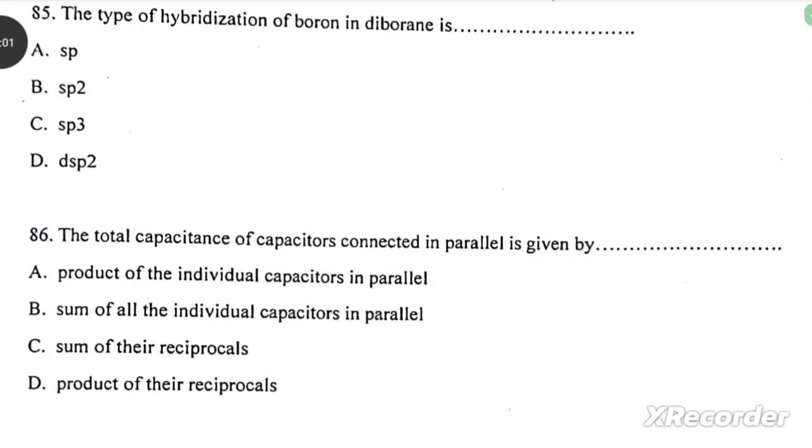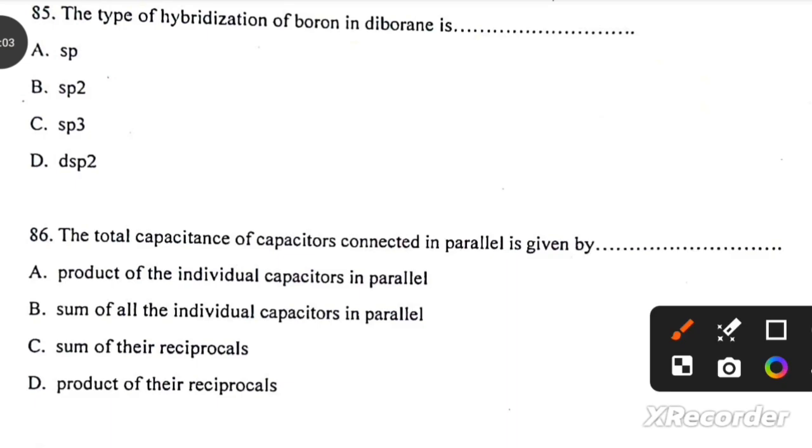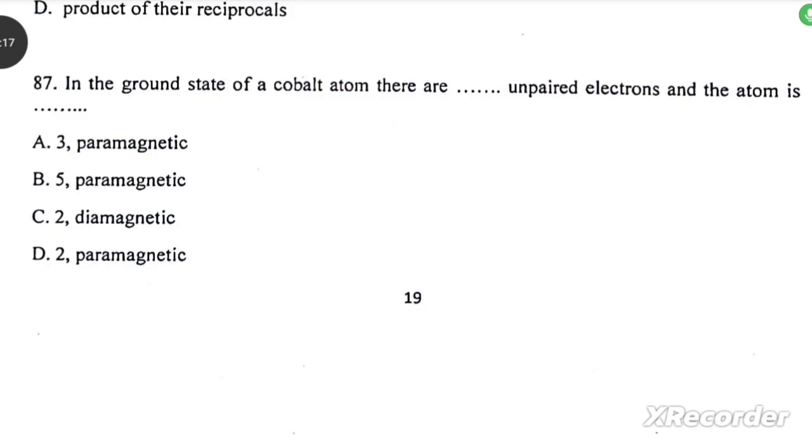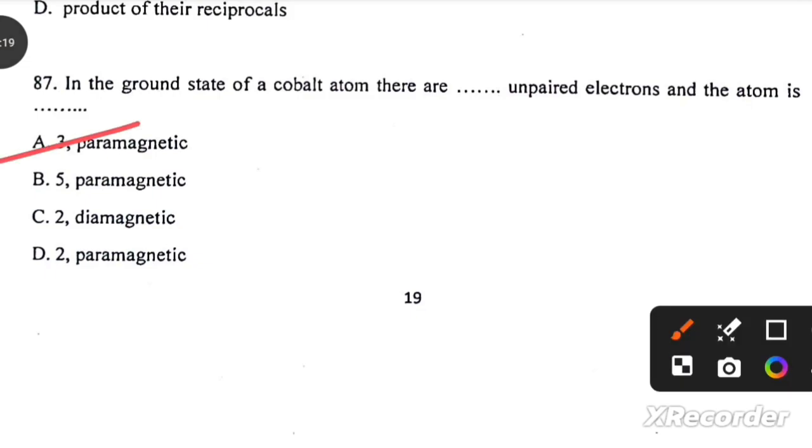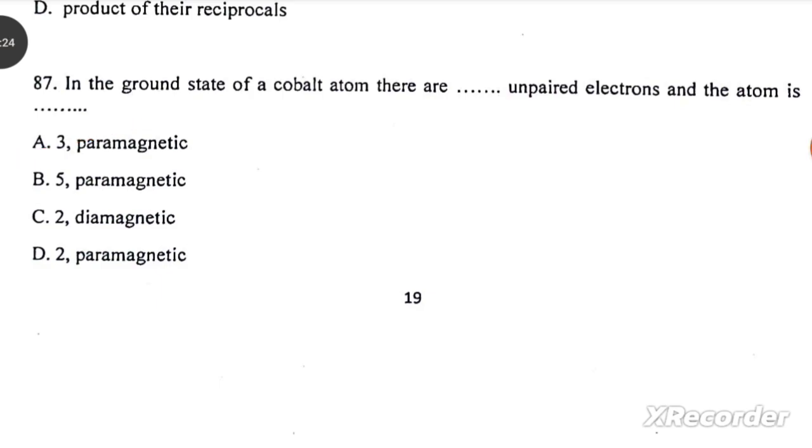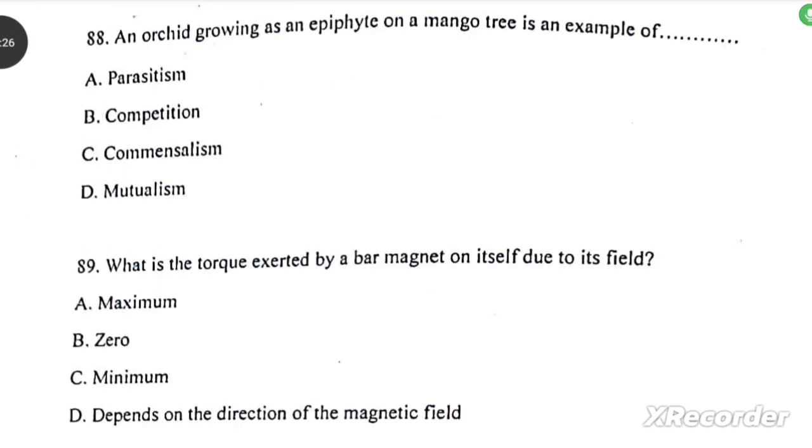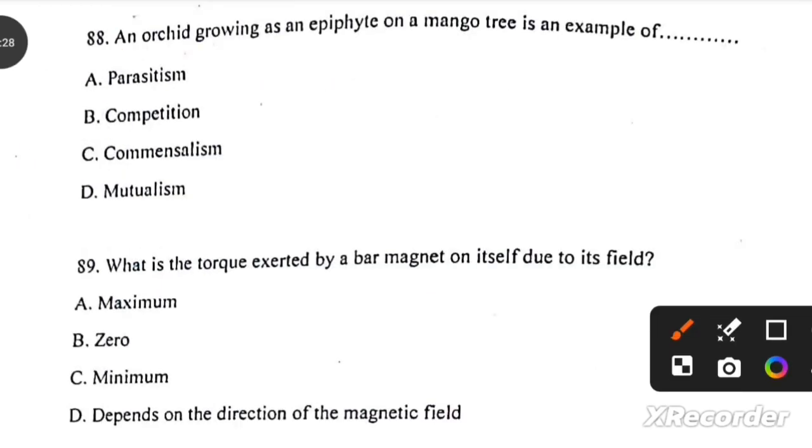The type of hybridization of boron in diborane is sp3. The total capacitance of capacitors connected in parallel is given by sum of all individual capacitors in parallel. In the ground state of cobalt atom there are three unpaired electrons and the atom is paramagnetic. An orchid growing as an epiphyte on a mango tree is an example of commensalism.